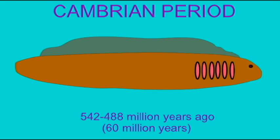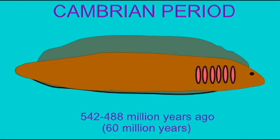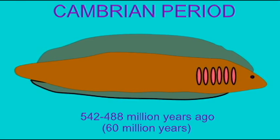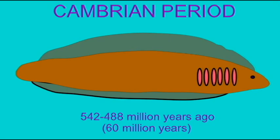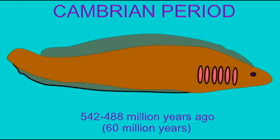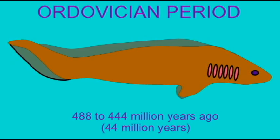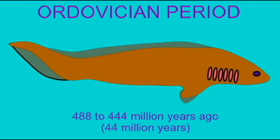If the evolutionary model is accurate, the ancestors of the human lineage began the Ordovician period as simple jawless fish. By the end of the Ordovician period, they were either primitive jawed fish or the ancestors of the primitive jawed fish. The fossil record of the Ordovician is fragmentary and fragmentary evidence suggests that jawed fish did exist by the end of the period.